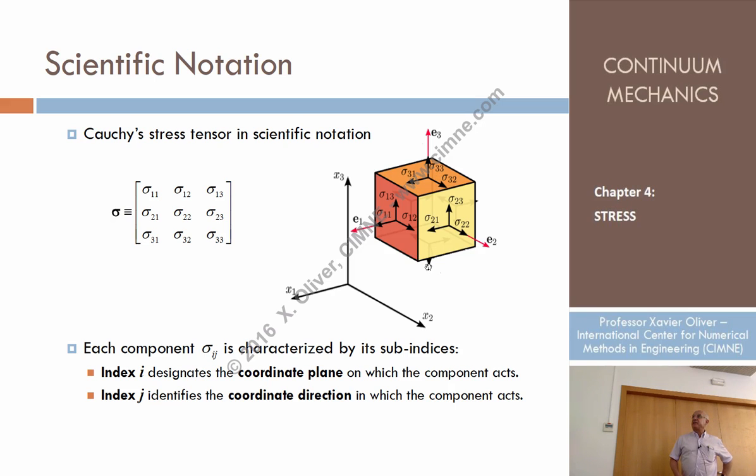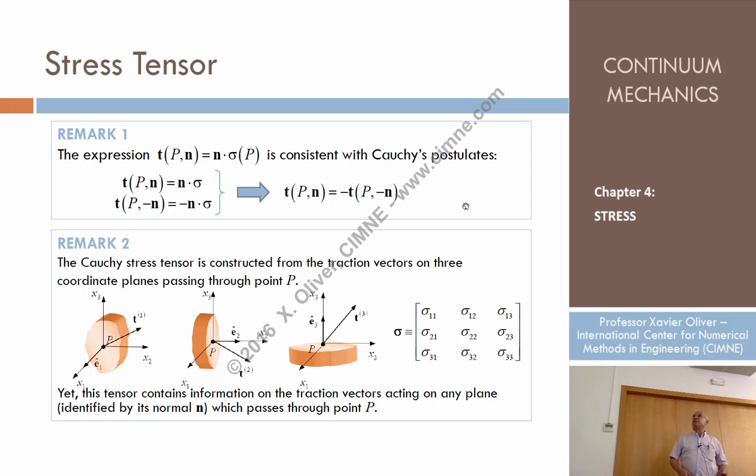So here would be sigma 3,3 of modulus but pointing down, that would be sigma 3,1 pointing that one, and that would be sigma 3,2 but pointing that one. Because of course, in virtue of this equation, when I change the n to minus n, the components have to change the sign.